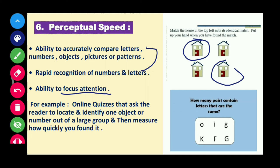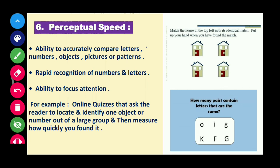Examples of perceptual speed include exam questions where you are given figures and asked which one matches a given shape, as well as online quizzes that ask the reader to locate and identify one object or number out of a large group, then measure how quickly they found it.